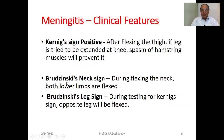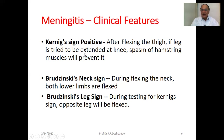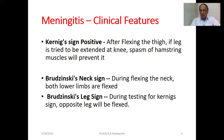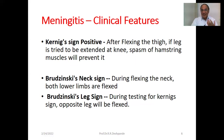Kernig sign and Brudzinski's sign are very, very important for meningitis, along with Babinski sign. Kernig sign is positive when, after flexing the thigh, if the leg is tried to be extended at the knee, spasm of the hamstring muscle will not allow extension of the leg. You must learn this in your clinics and hospitals because it is asked in the viva or oral examination. The examiner will say: show me the Kernig sign; do the Brudzinski neck sign; do the Brudzinski leg sign. Brudzinski's neck sign: during flexion of the neck, both lower limbs are also flexed. That is the Brudzinski neck sign.